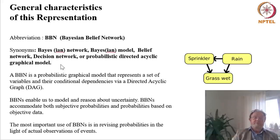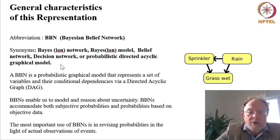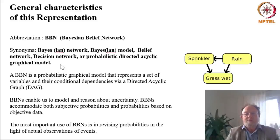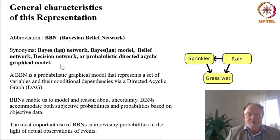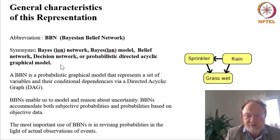A BBN enables us to model and reason about uncertainty. BBNs accommodate both subjective probabilities and probabilities based on objective data, but in both cases we talk more about assertive probabilities rather than probabilities based on frequencies. The most important use of BBNs is in revising probabilities in the light of actual observations of events.